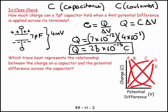And this next one is: which trace best represents the relationship between the charge on a capacitor and the potential difference across the capacitor? So here's the charge on the capacitor, and that's the vertical axis. The symbol for charge is Q—it's measured in coulombs so there's a C there, but the symbol for charge is Q. And the potential difference for this is ΔV.